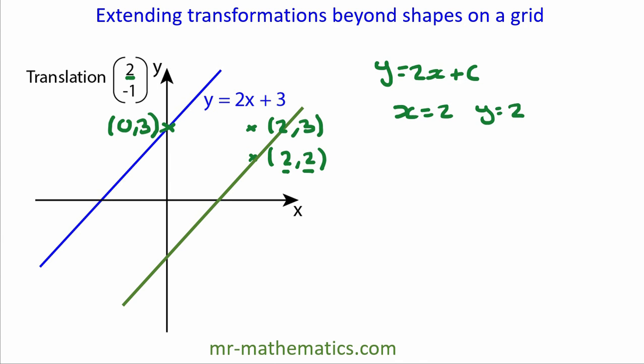We can put these values of x and y into the equation, so y, which is 2, equals 2 lots of x, which is also 2, plus c. So 2 will equal 4 plus c, so c must equal negative 2.